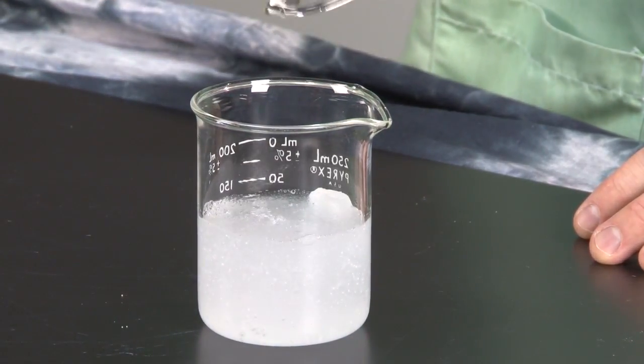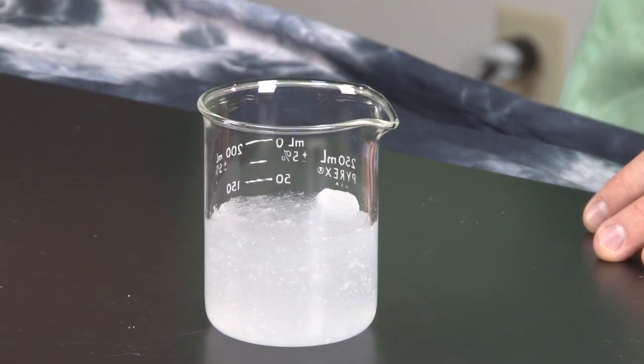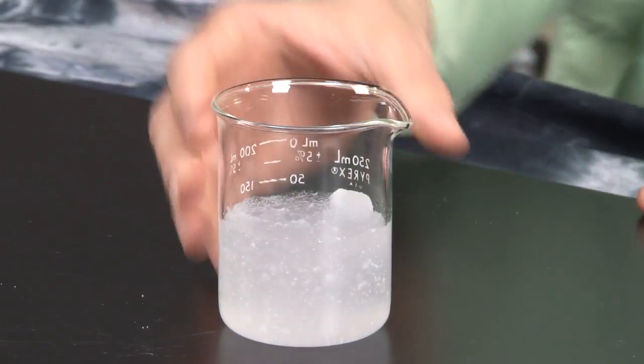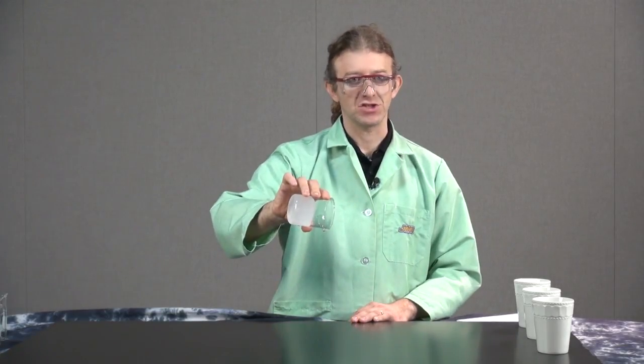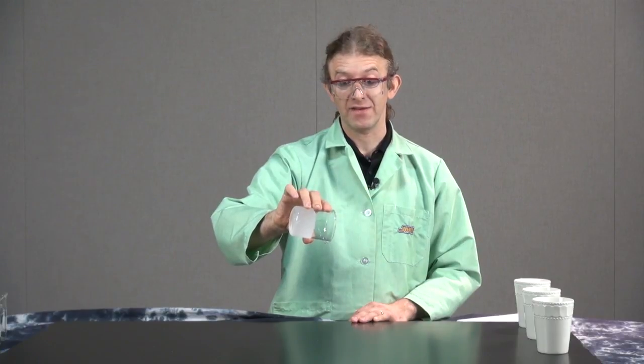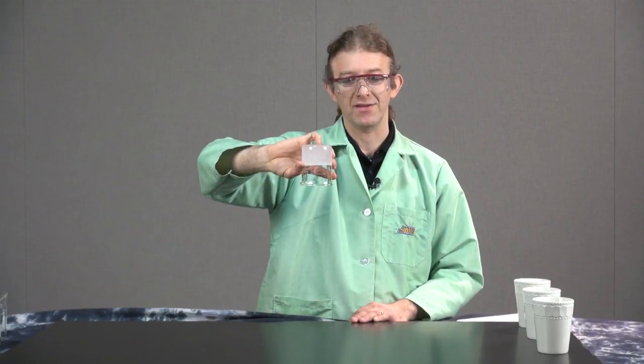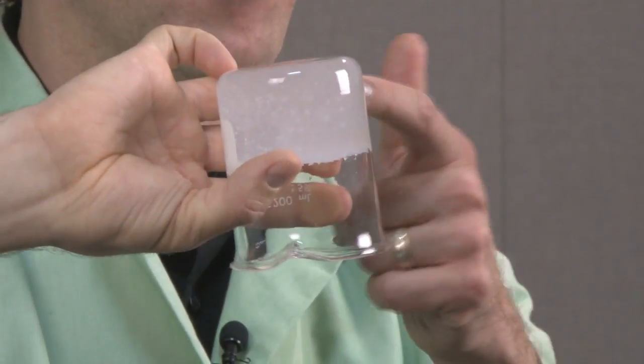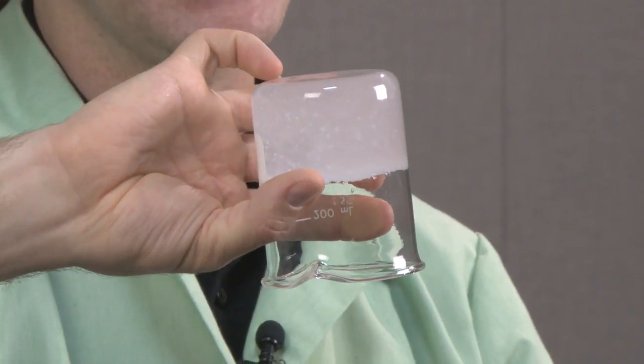And as I pour it, you can see within a couple of seconds, the polymer swells and we quickly form a nice stable gel that does not flow even when I tilt the mug. I can tilt it all the way upside down and it doesn't flow. Even though this is largely water, almost completely water, except for that small amount of polymer that we had in there.